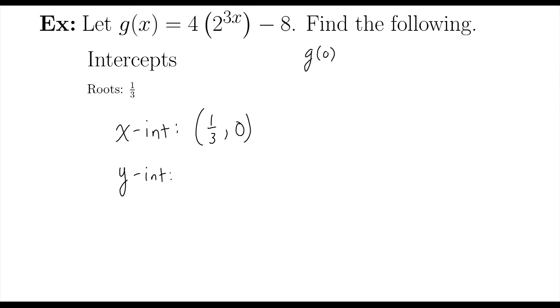zero into the function for x. Okay, and then just working this out. Three times zero is zero, so that's two to the zero power. Two to the zero power—anything to the zero power is going to give me one.